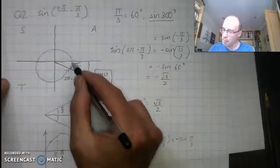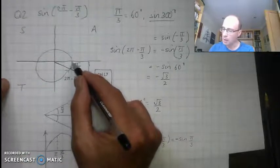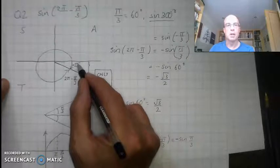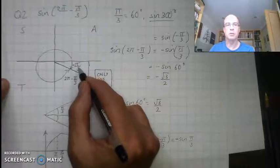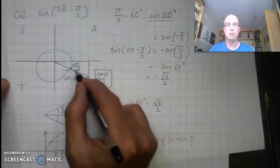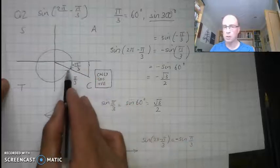I can also get there by starting here and going clockwise. So by turning through minus π/3, so my minus 60 degrees. So these things are the same.